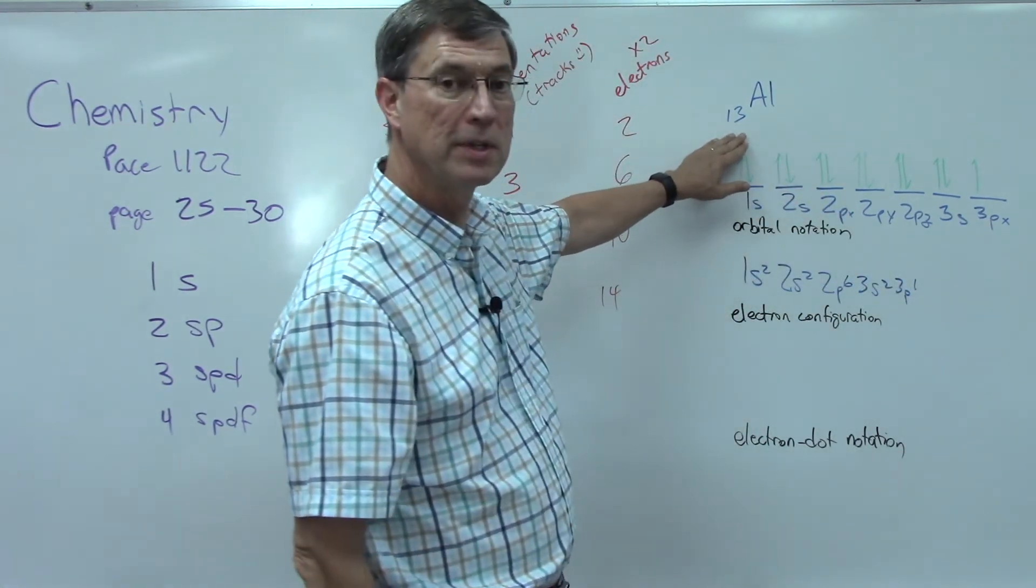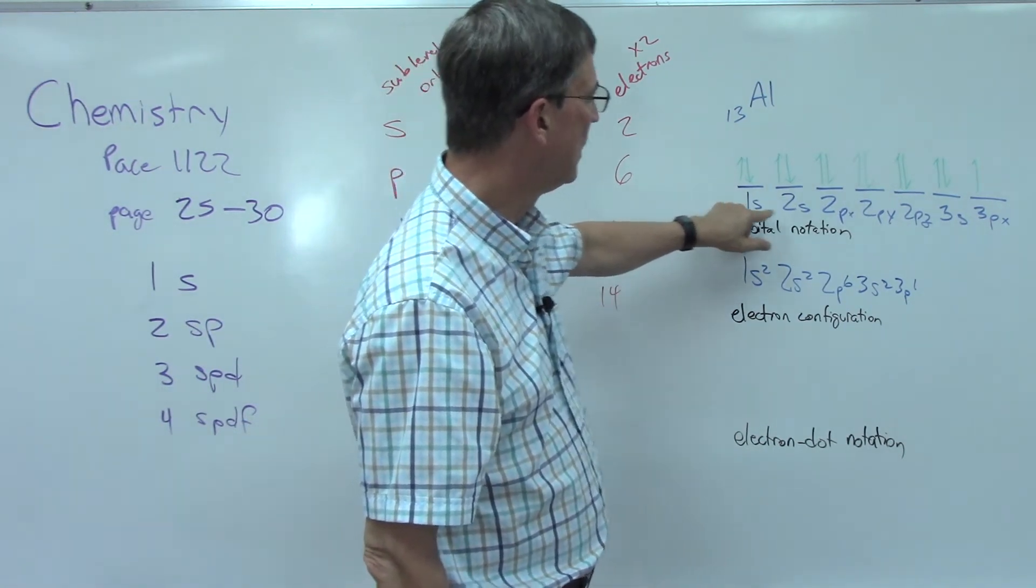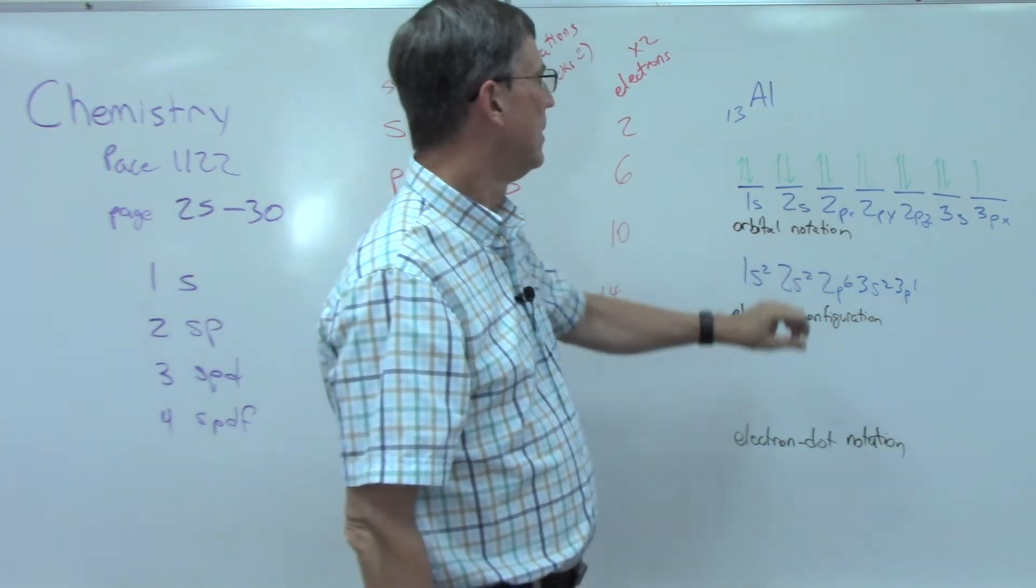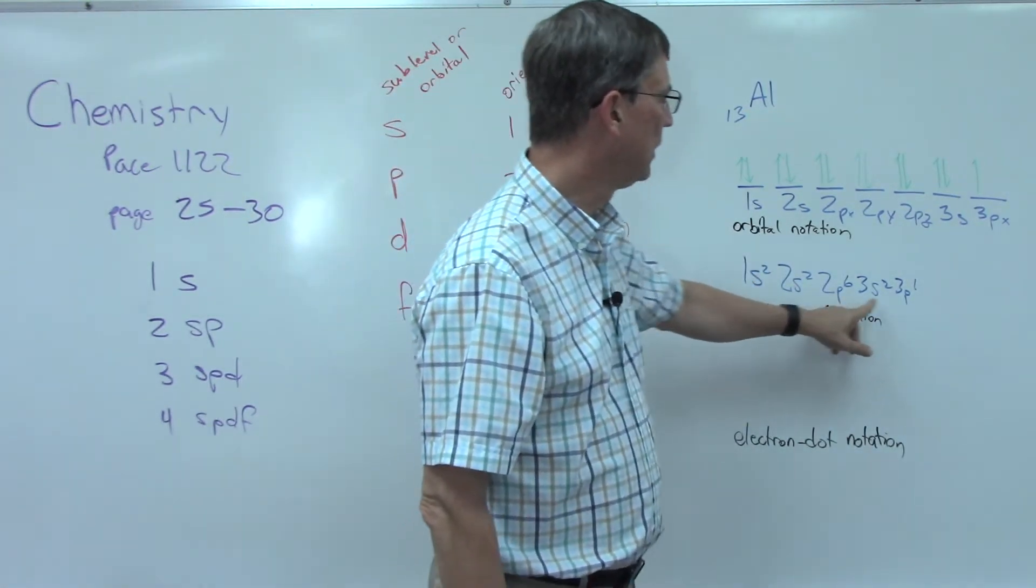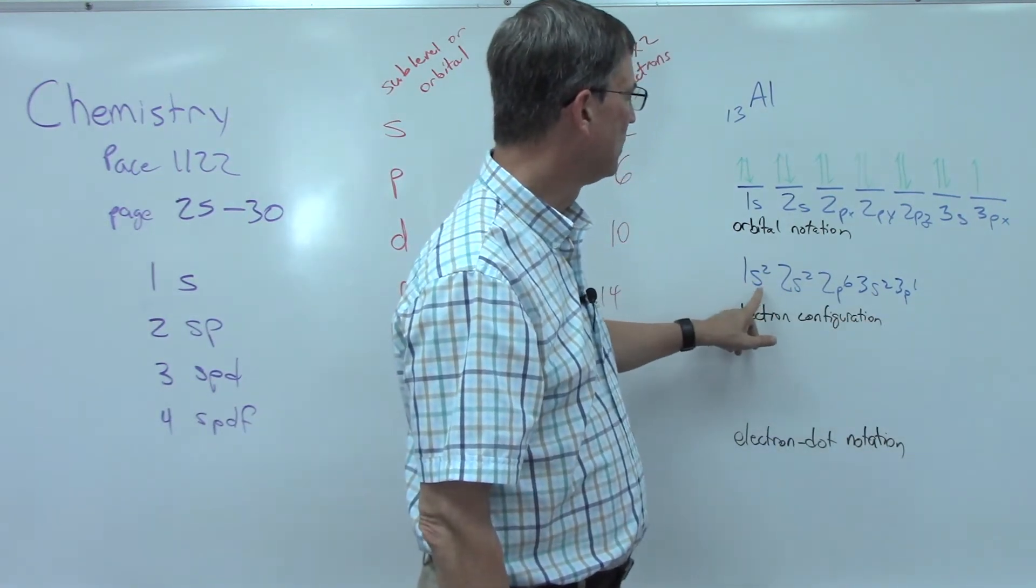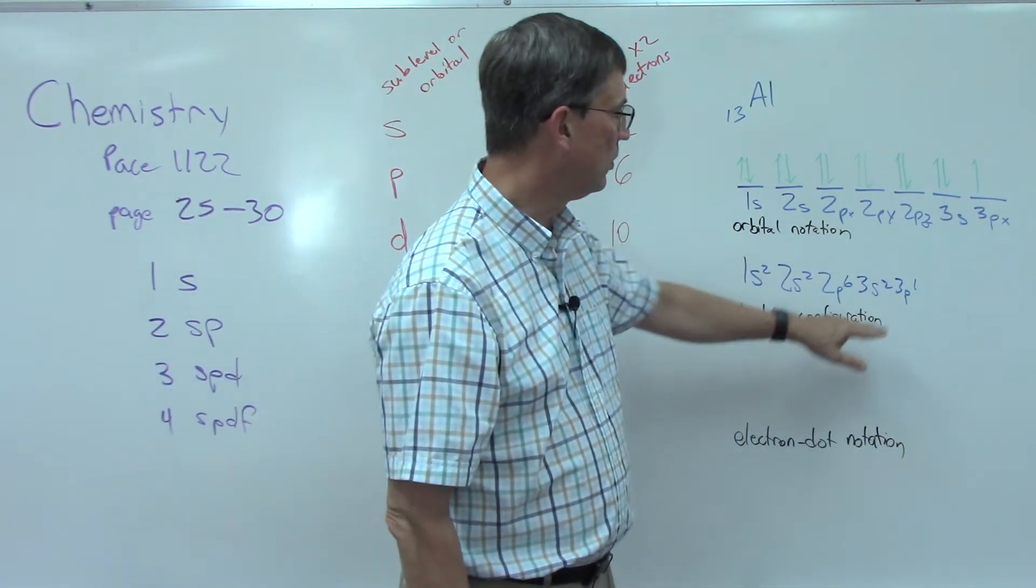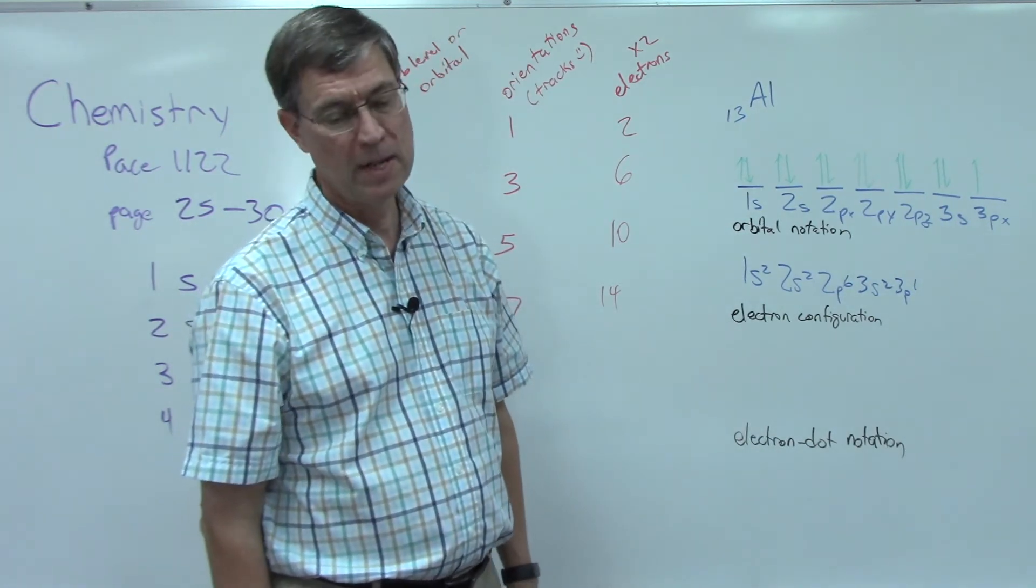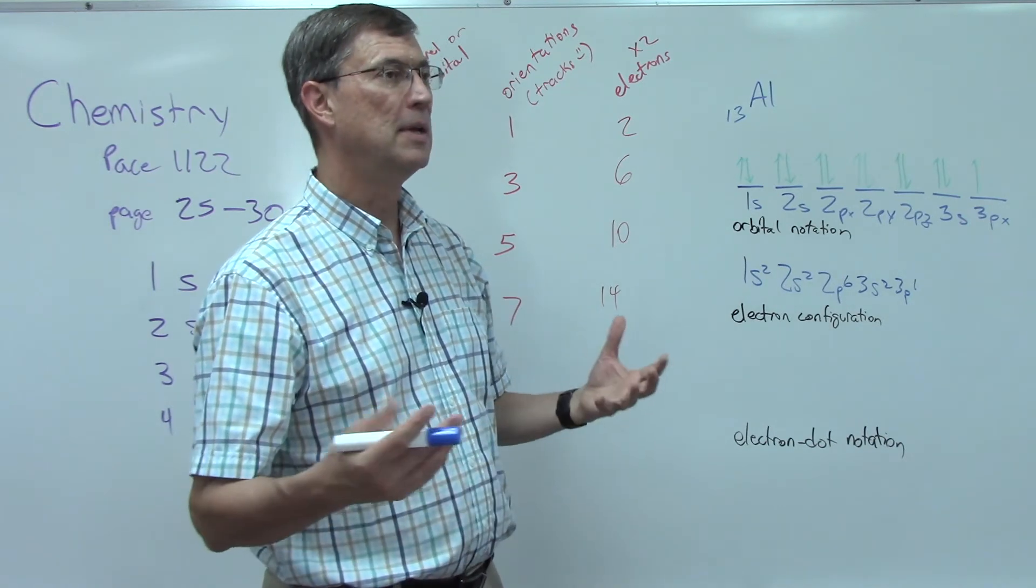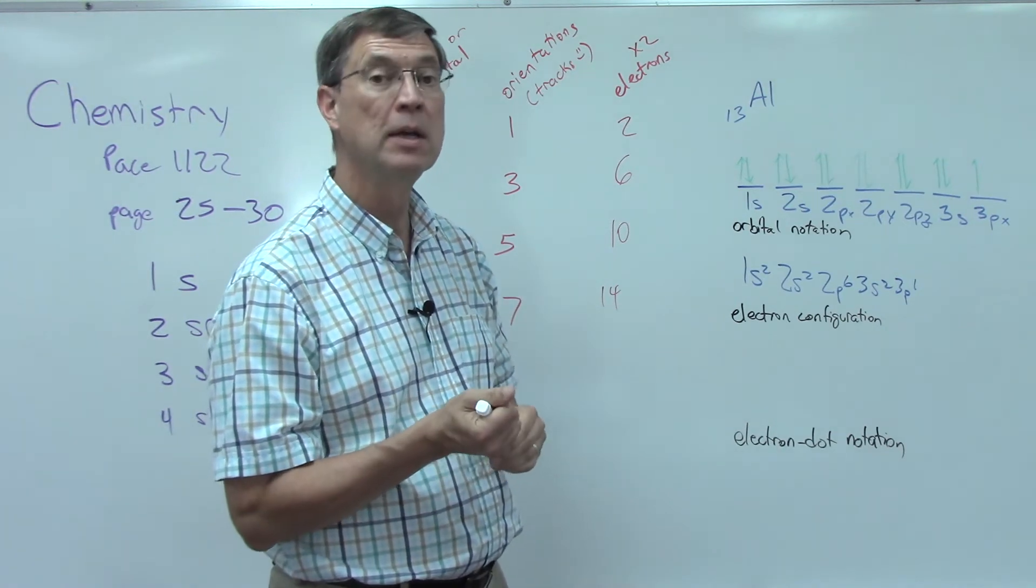And if you add up all of those exponents, two plus two plus six plus two plus one, you'll get thirteen. Alright, so if we actually show the arrows and the orientations, we call that orbital notation. If we just simplified a little bit more, showing the energy level which is the one, two, and three, and the orbitals which is the s and the p, and then the number of electrons in each of those, that's called the electron configuration. And there's one more type that's going to be very important as we move forward and talk about how elements and atoms can combine with each other.